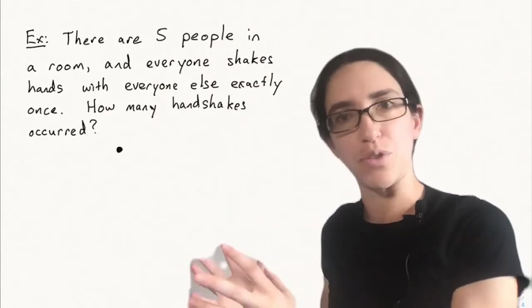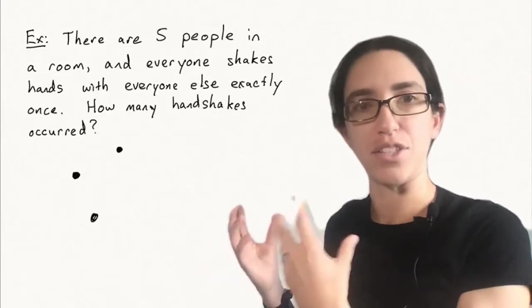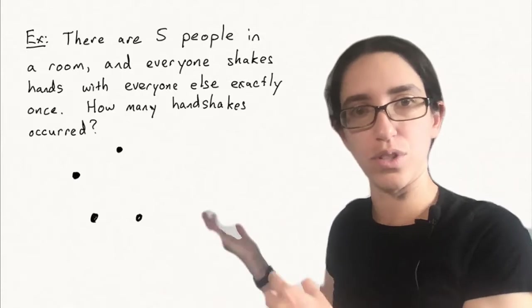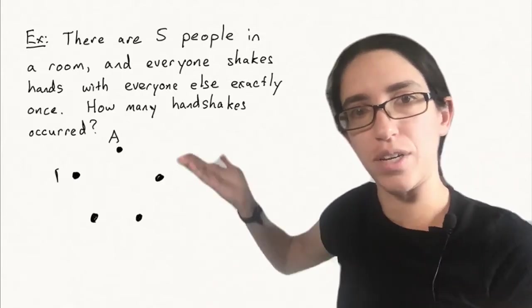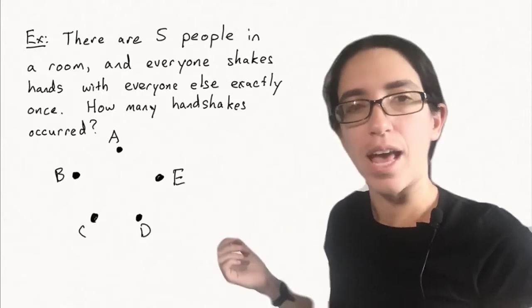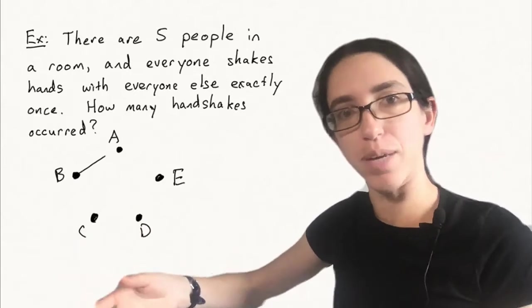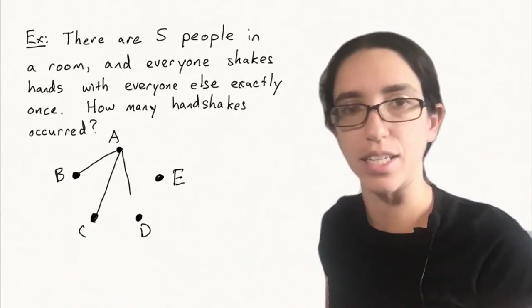So one way of visually representing this problem is with what's called a graph. A graph has nodes and edges. The nodes here are going to represent the people. Nodes are just drawn as dots. And we often label the nodes. So let's label the people A, B, C, D, and E. And then a handshake between the people can be represented as what's called an edge of the graph, which is just a segment connecting two of the dots.